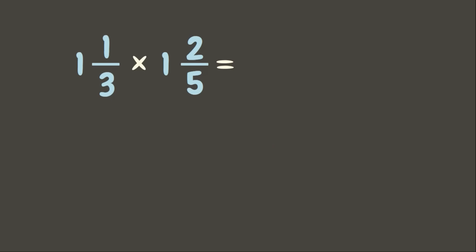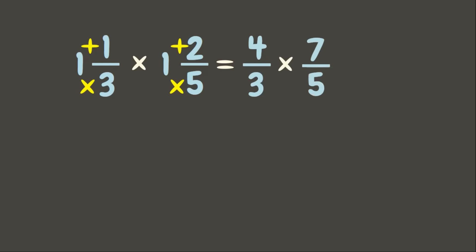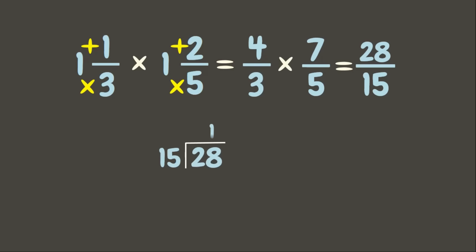Now let's have another example. First step: change the mixed numbers into improper fractions. 3 times 1 is 3, plus 1 is 4, giving us 4 over 3. Then 5 times 1 is 5, plus 2 is 7, copy the denominator: 7 over 5. Now let's multiply: 4 times 7 is 28, and 3 times 5 is 15. Since it is an improper fraction, we need to change it into a mixed number. 28 divided by 15 is 1, 1 times 15 is 15, and 28 minus 15 is 13. Our final answer is 1 and 13 fifteenths.